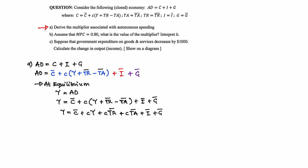Collecting like terms: all values with Y come to the left and all values without Y stay on the right. So we have Y minus CY equals autonomous consumption plus MPC times autonomous transfer payment plus MPC times autonomous tax plus autonomous investment plus autonomous government spending.